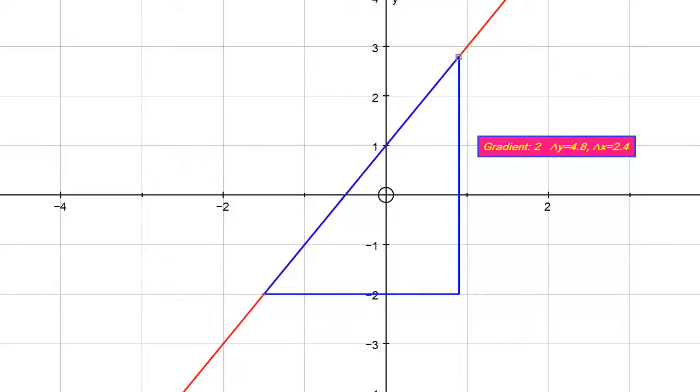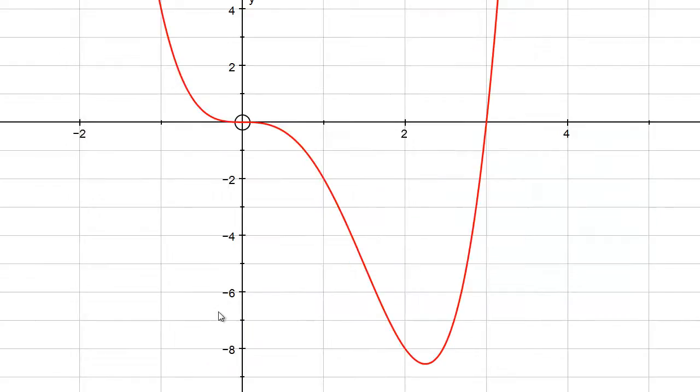And that's not true for all types of curves. For example, if I look at this curve here, it's much more complicated. I couldn't just say that the gradient of this curve is a particular number because it's not a straight line.